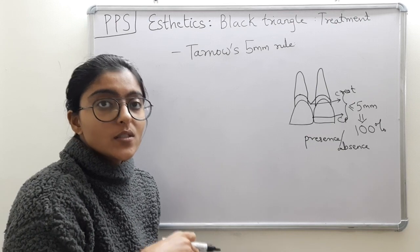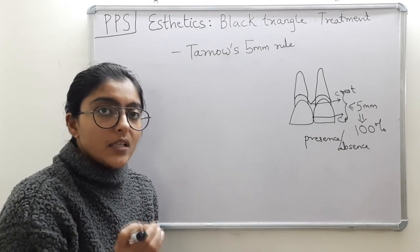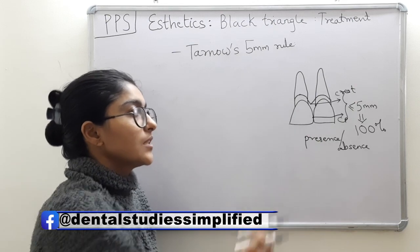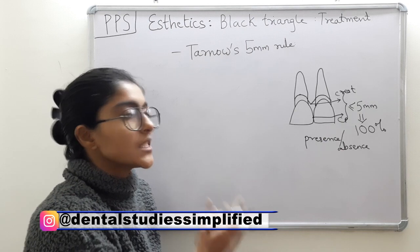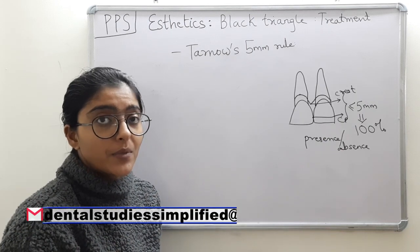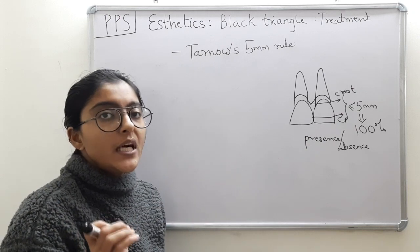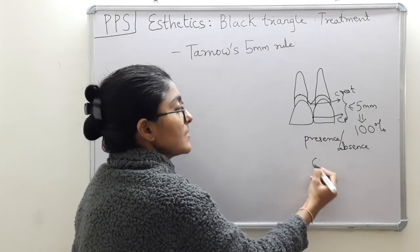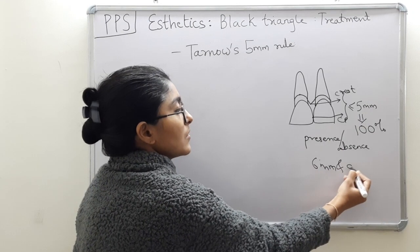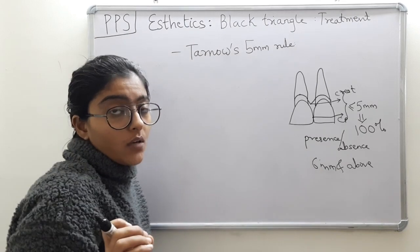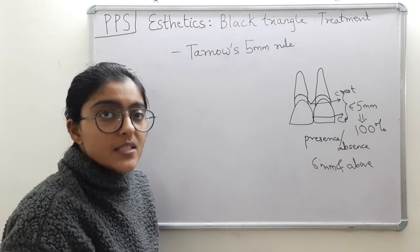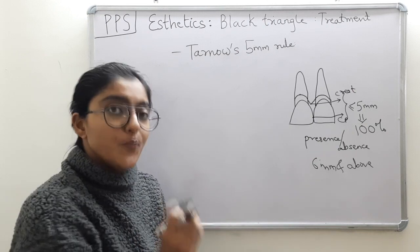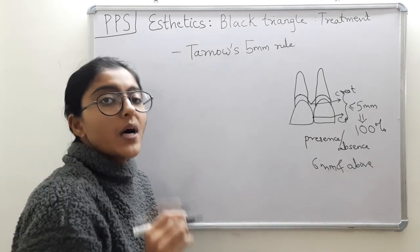The diagnostic step before deciding upon a surgical technique for papilla reconstruction is to measure this distance in the case per se. If the distance is favorable, only then should we attempt papilla reconstruction. Otherwise, even if we attempt it, we will not get 100% fill, because in the same study when this distance was 6mm and above, the papilla was not always present. When it was present, it was only partial fill, not complete.